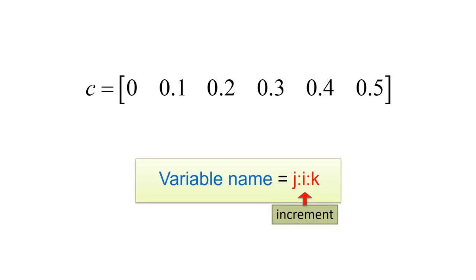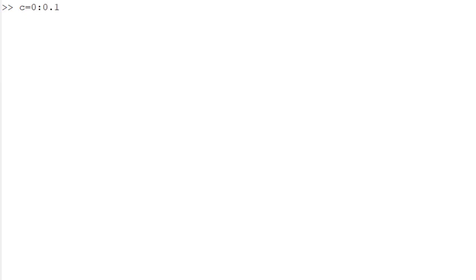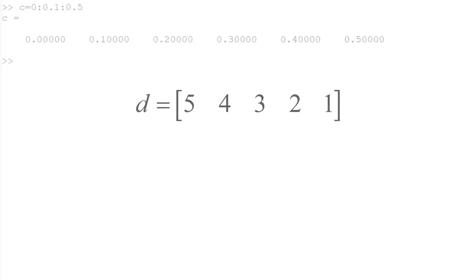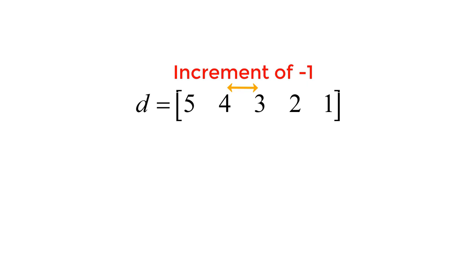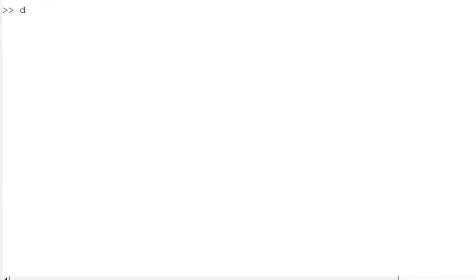To create a 1 by 6 row vector C having 0 to 0.5 with increment of 0.1, you can still use square brackets, but since the increment is 0.1 rather than 1, you need to specify it. Type 'C = 0:0.1:0.5'. For a 1 by 5 row vector D having 5 to 1, consider it as a series from 5 to 1 with increment of -1: type 'D = 5:-1:1'.